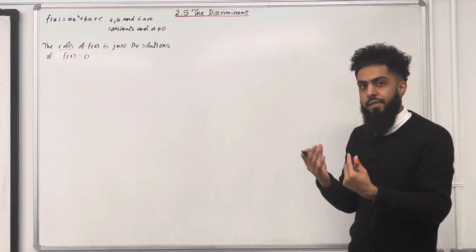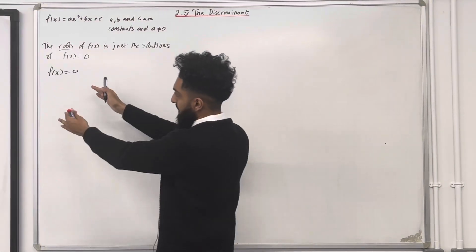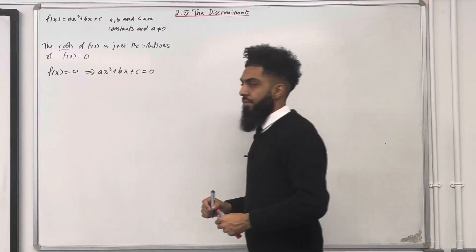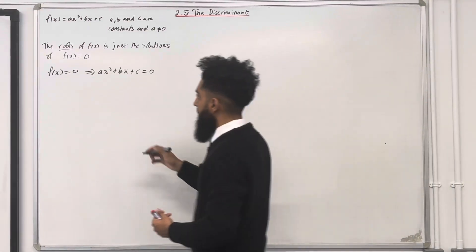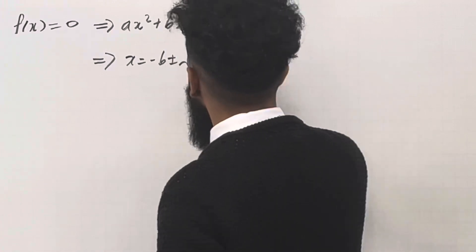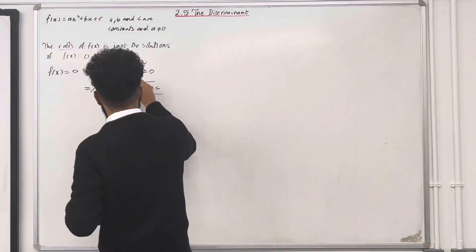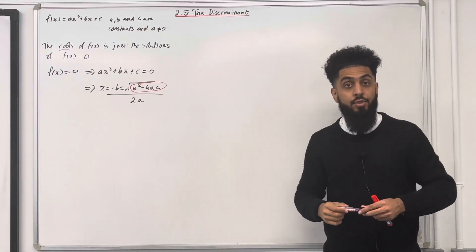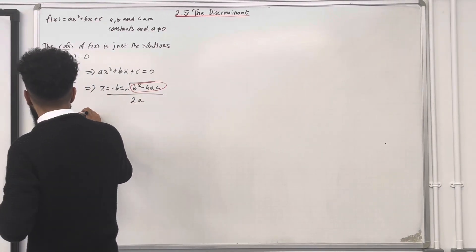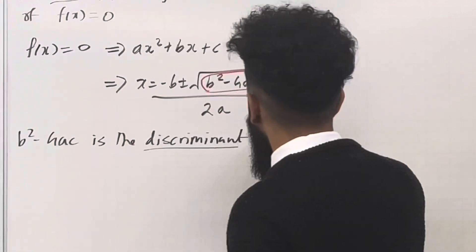Setting f of x equal to 0 implies that ax squared plus bx plus c is equal to 0. The solution of this quadratic equation is therefore x equals minus b plus or minus square root of b squared minus 4ac, all over 2a. The b squared minus 4ac, which is inside the square root, has an important name — it is called the discriminant of your quadratic function.